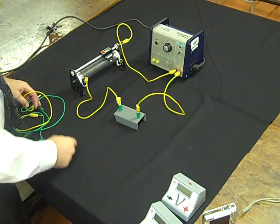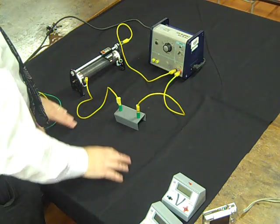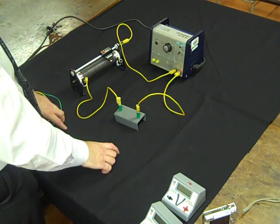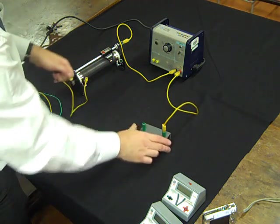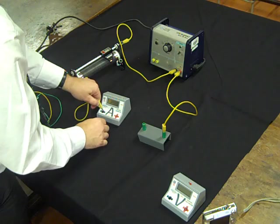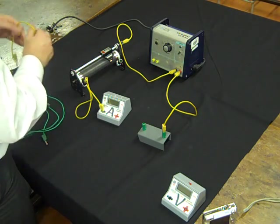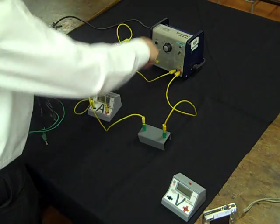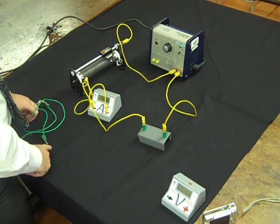This is our basic circuit. Now we want to put the ammeter in to measure the current. The ammeter must be connected in series. To do that, we must break the circuit and connect the ammeter like this. Now we have a series circuit containing the ammeter.